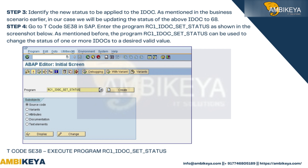Step 4: Go to T-code SE38 in SAP and enter the program RC1_IDOC_SET_STATUS, as shown in the screenshot below. This program can be used to change the status of one or more IDocs to a desired valid value.